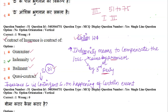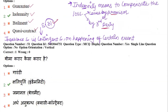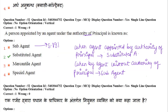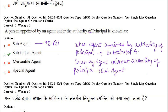Next question: a person appointed by an agent under the authority of a principal is known as — sub-agent, substitute agent, McIntyre agent, or special agent? The answer is substitute agent. When the principal's authority allows the agent to appoint someone, that person is called a substitute agent. When the agent appoints someone without the authority of the principal, that is called a sub-agent. Section 191 of the Indian Contract Act is about sub-agent.